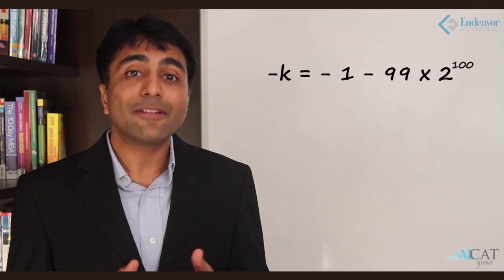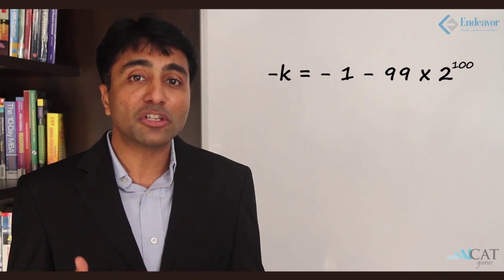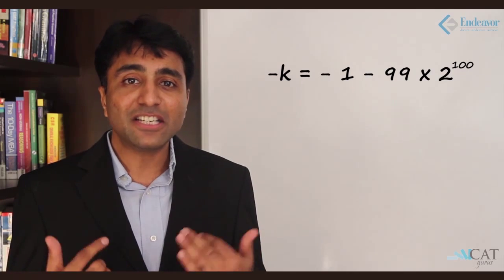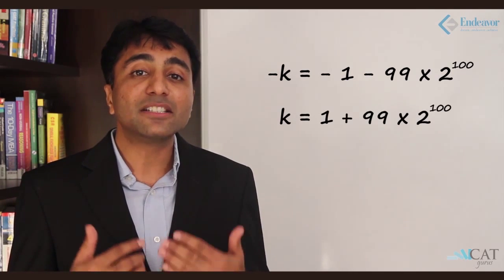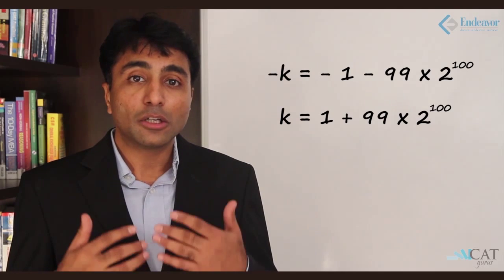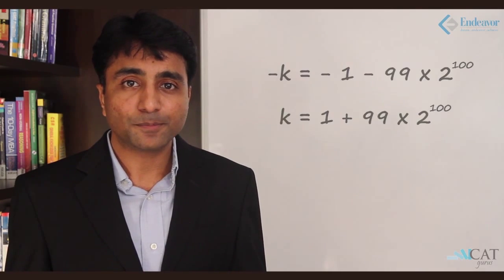To find k, we change signs: k equals 1 plus 99 times 2^100. So we have seen the most important and challenging concepts in the application of progressions — arithmetic, geometric, and combined AGP. I hope the discussion was helpful. Thank you.